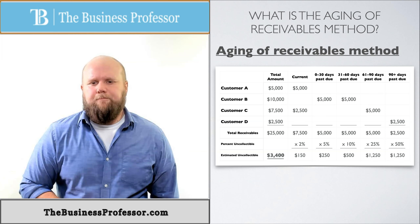I total out each of those columns, and then each category has its own percentage of uncollectible. The current ones I only consider about 2% uncollectible. One month past due is about 5%, two months is 10%, three months is 25%, and four months or more is 50-50 — they're going to pay or they're not. I multiply those percentages by each classification's totals, add them all up, and that gives you $3,400. That would be my ending balance for the aging of receivables method — the ending balance of the allowance for doubtful accounts.